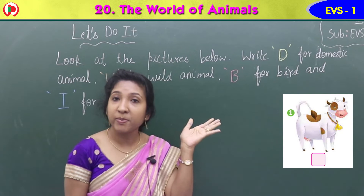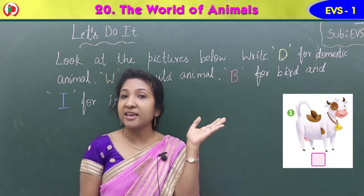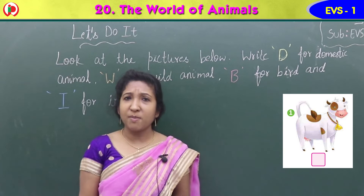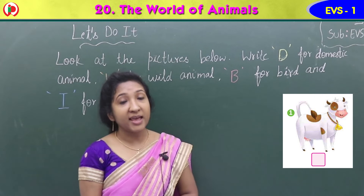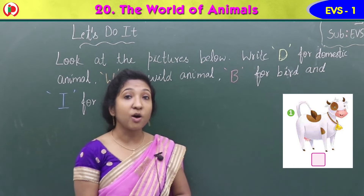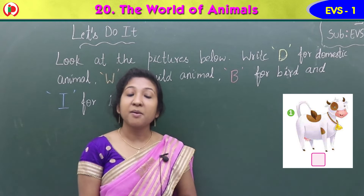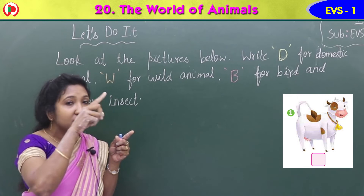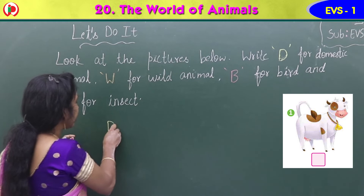Which animal can you see here? It is a cow. Is cow a domestic, wild, bird, or insect? Cow is a domestic animal — it is a useful animal which gives us milk. So you can write D in the square box.